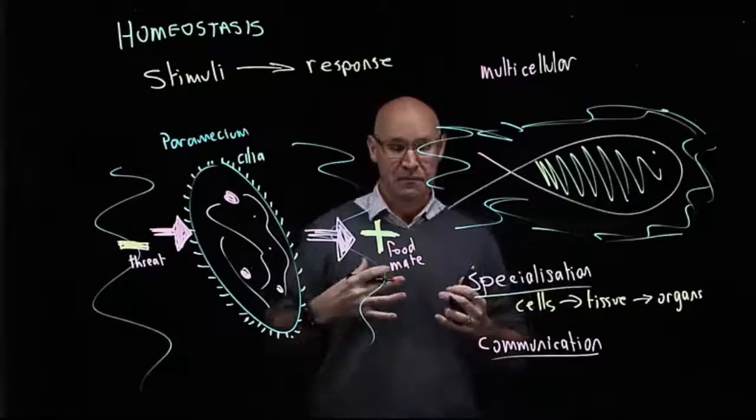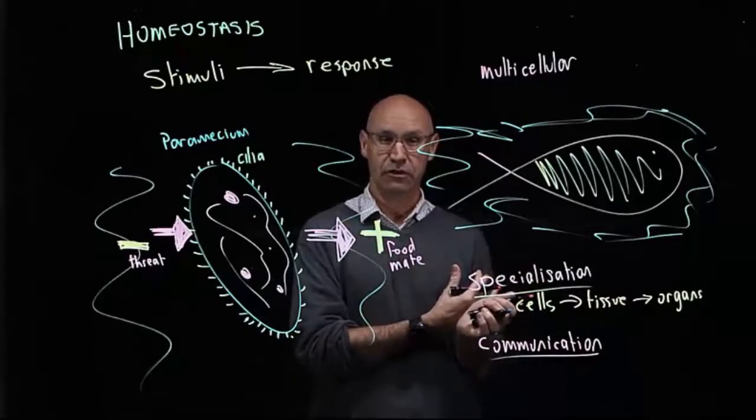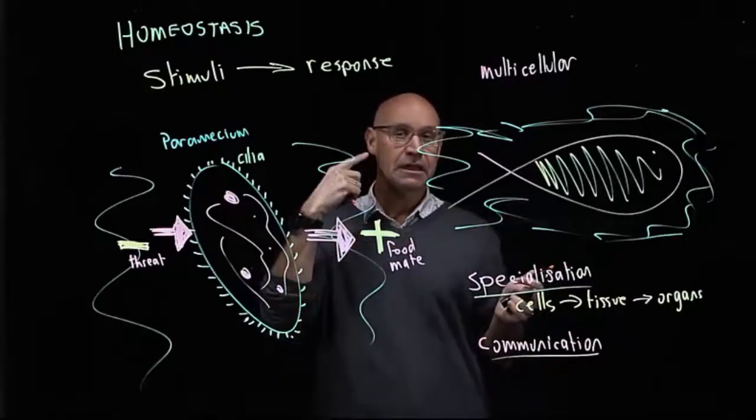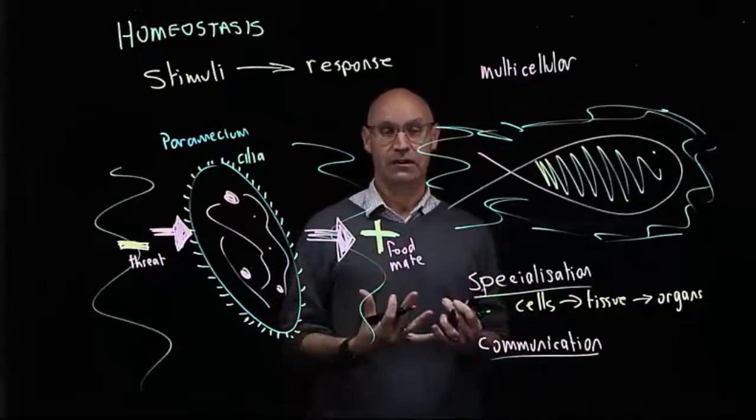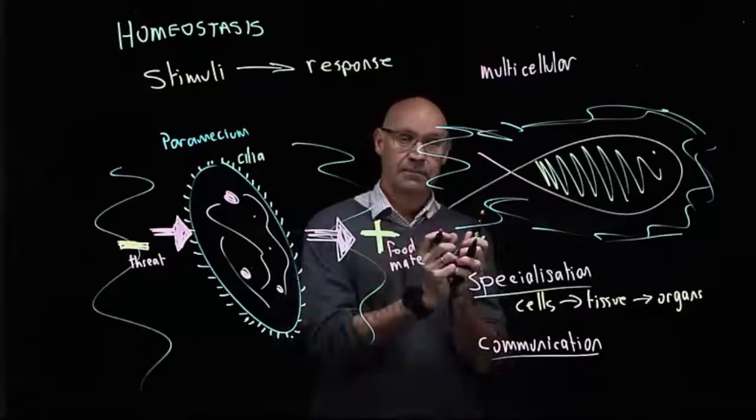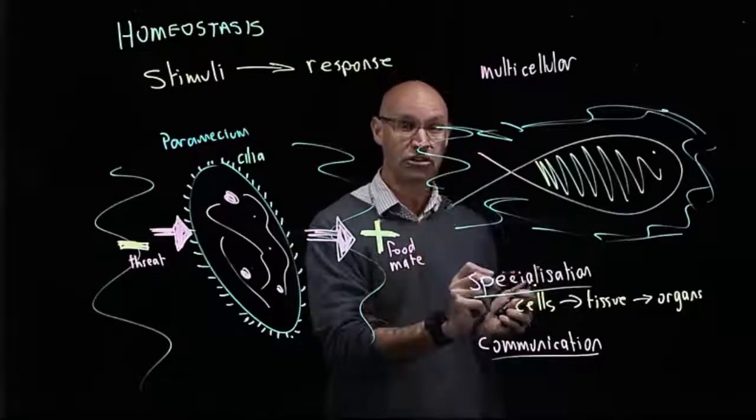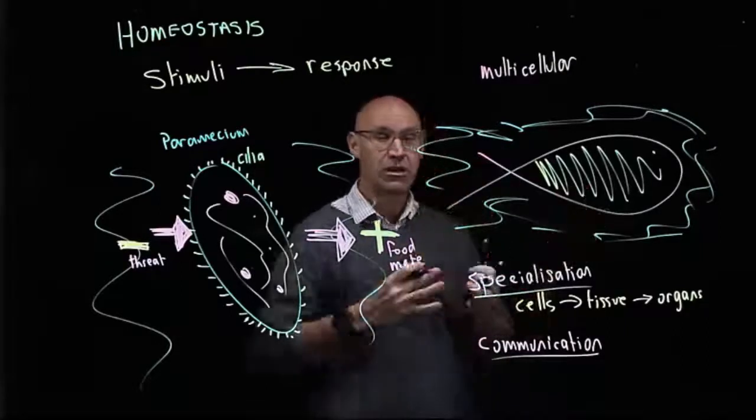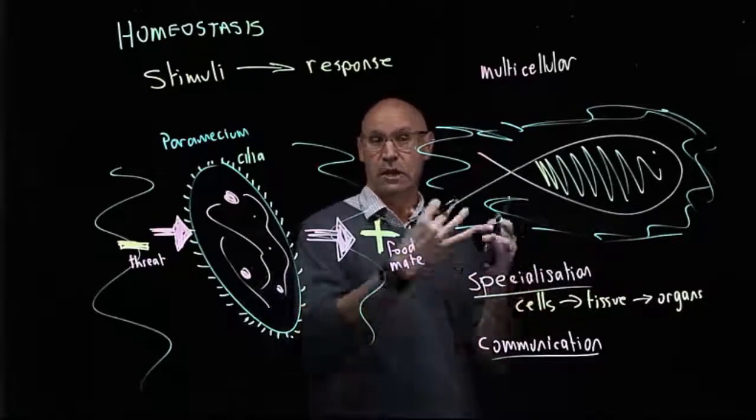If you think, for example, if somebody goes for a run, they're using more oxygen and producing more carbon dioxide. That goes into the blood and it's detected in the blood near the brain, which sends a message to the lungs to breathe deeper and faster. It sends a message to the heart to pump faster and harder. So we've got specialized cells, tissue, and organs that have specialized functions. And we have sensors that monitor the environment and communicate instructions to those specialized parts of the body to be able to respond.